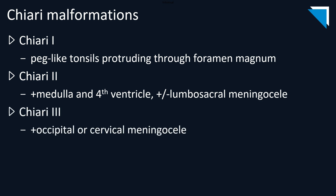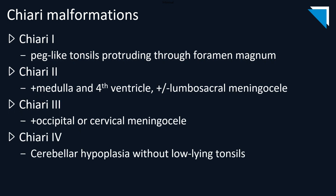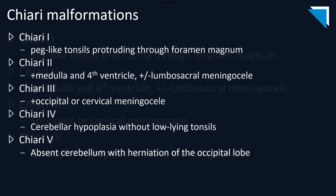Chiari 3 malformations look very much like Chiari 2 malformations with the addition of an occipital or upper cervical meningocele. Chiari 4 malformations present with severe cerebellar hypoplasia and no protrusion through the foramen magnum. Patients with Chiari 5 malformations have an absent cerebellum and herniation of the occipital lobe through the foramen magnum. These are the five main types; two others exist but those terms are infrequently used and are not clinically significant.